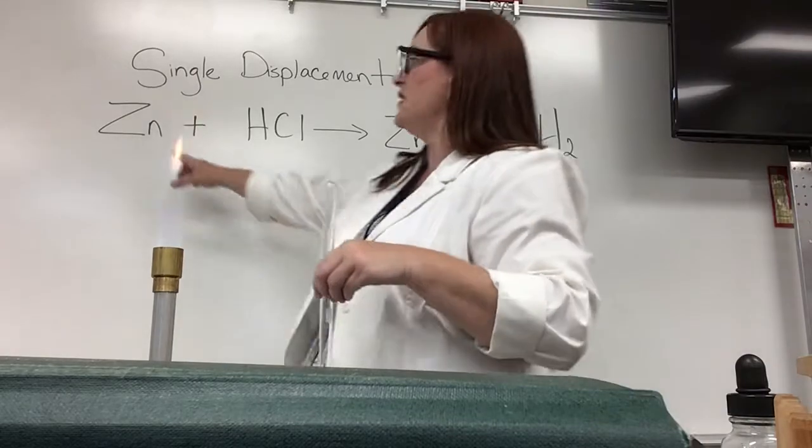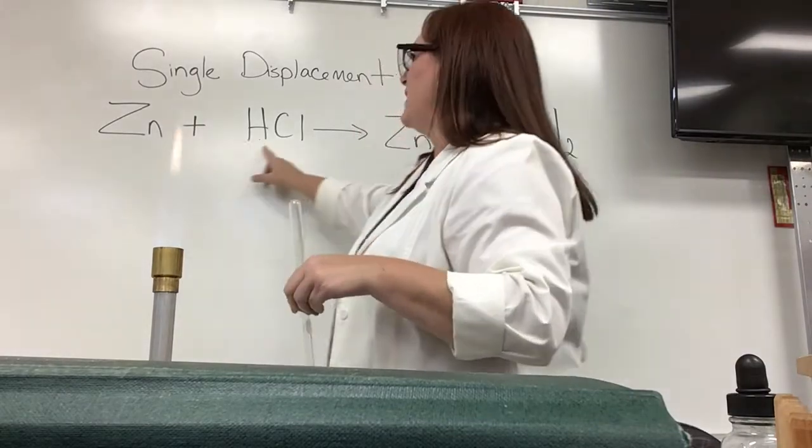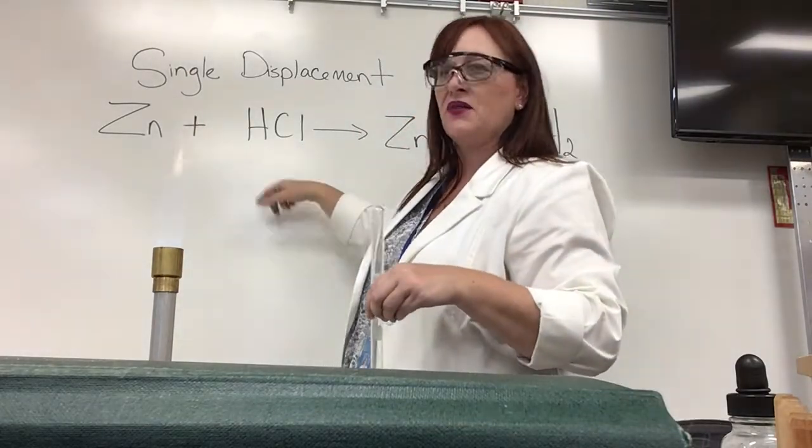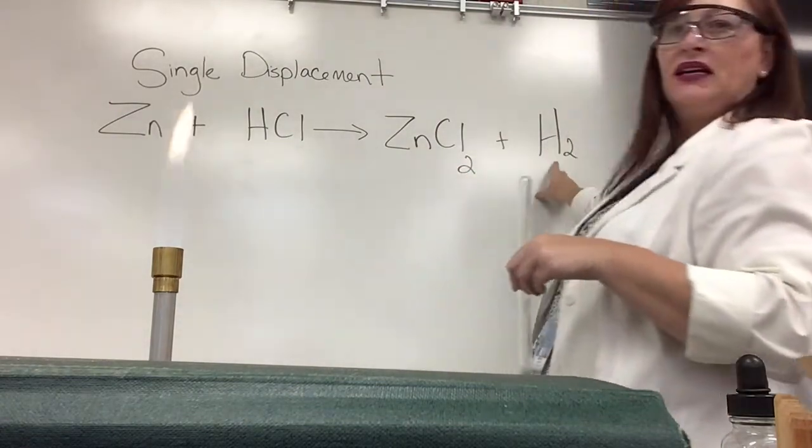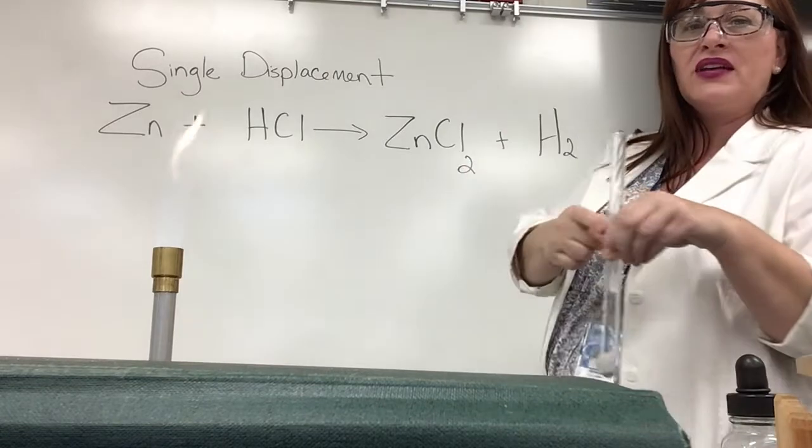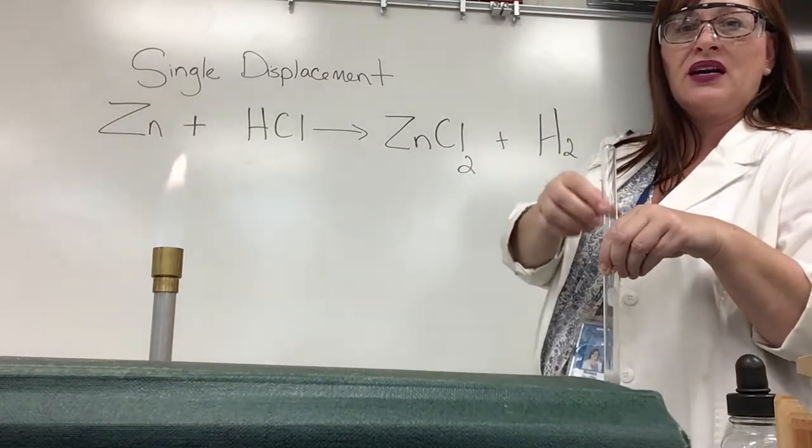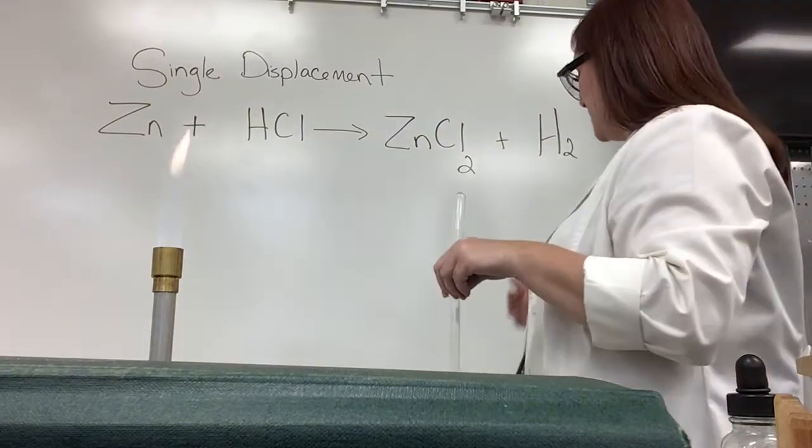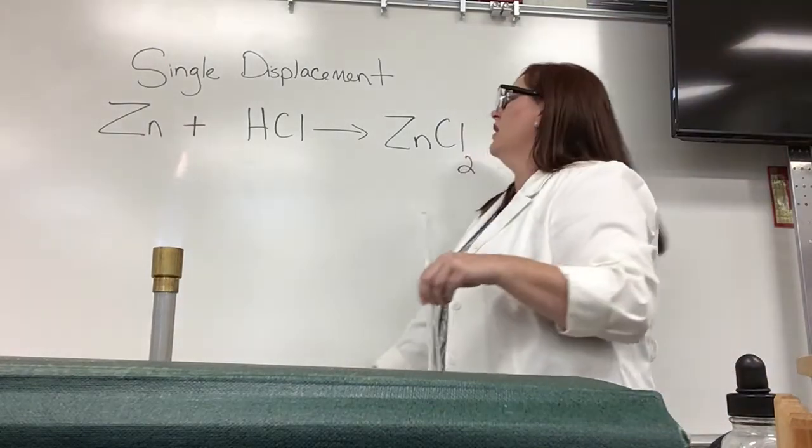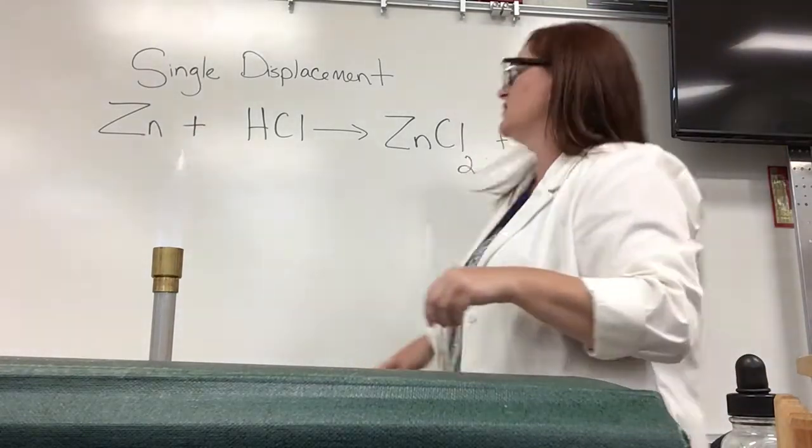So zinc is one of my reactants and HCl hydrochloric acid is the other reactant. The products of this are going to be zinc chloride and hydrogen gas. It's that hydrogen gas which is lighter than air so it's going to collect in the top of this test tube. Now this is not balanced, at least I haven't checked it. So let's look and see.